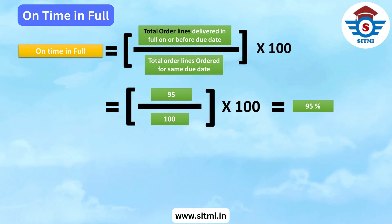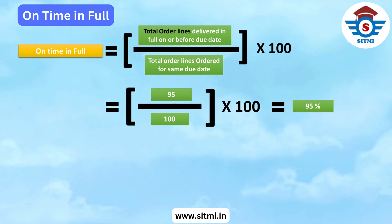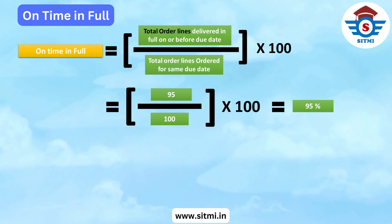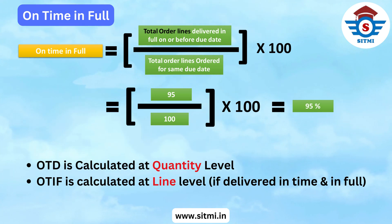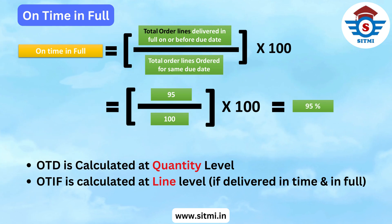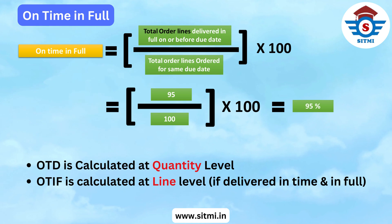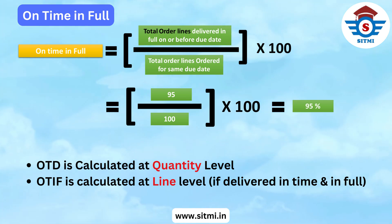Now, what is the difference between On Time Delivery (OTD) and On Time In Full (OTIF)? On Time Delivery is calculated at the quantity level, whereas On Time In Full is calculated at the order lines level. Additionally, in OTIF, it is also considered whether the complete order line is delivered in full or not.